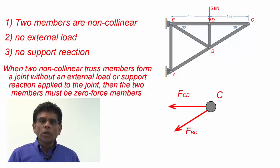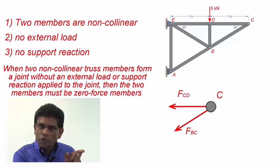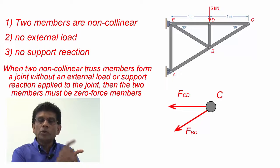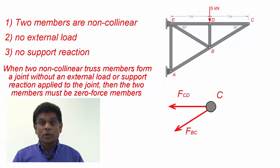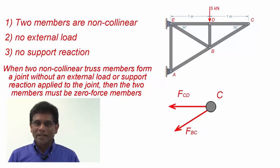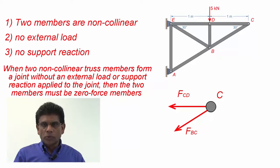I can now put these facts into a single rule. When two non-collinear truss members form a joint, and there is no external load or support reaction applied to that joint, then the two members must be zero-force members. This rule confirms what we already know from our calculations. I hope you can now apply this rule to any truss problem and identify the zero-force members. We will look at some examples a bit later.